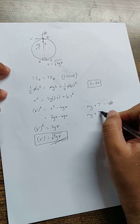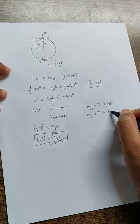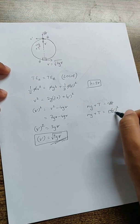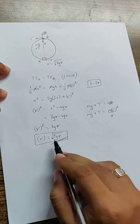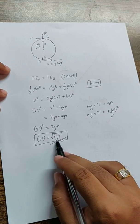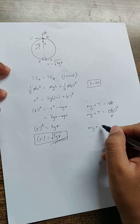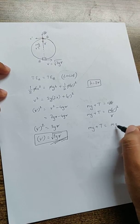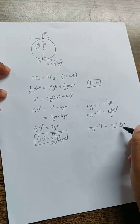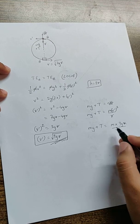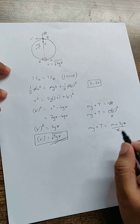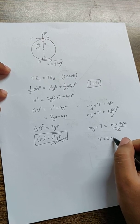Mg remains as it is, tension remains as it is, centripetal force I can write it as Mv dash square by R. V dash is the velocity at that point B, which is root 3gr, which I can substitute over here. So Mg plus tension is going to be M into 3gr by R, R will get cancelled, I will get 3mg. This minus Mg, the tension will become 2mg.